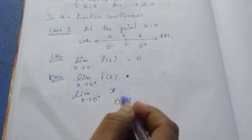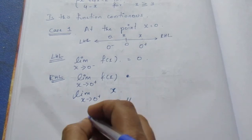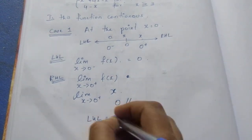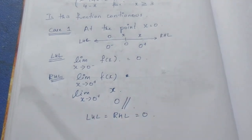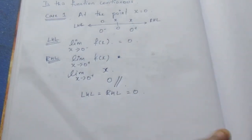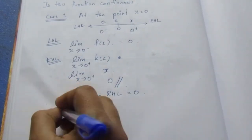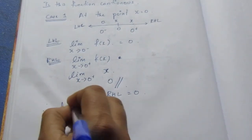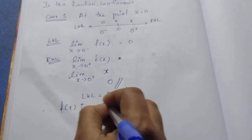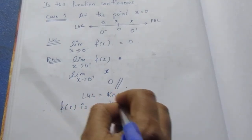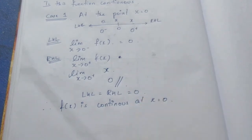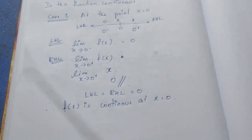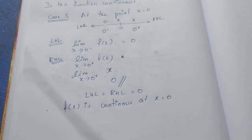Now, LHL and RHL are the same. So LHL equals RHL equals 0. Therefore, f(x) is continuous at x equals 0. Case 1 is done.